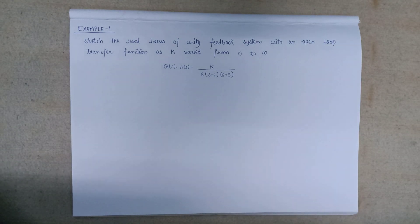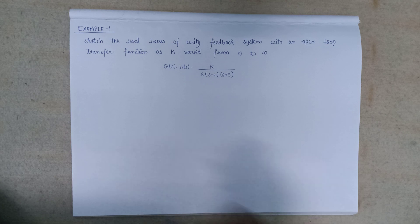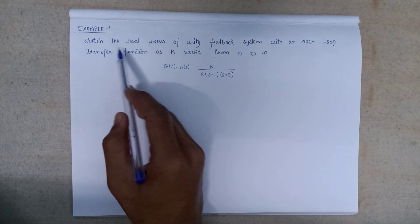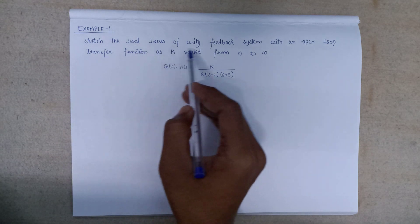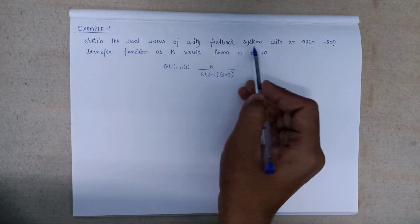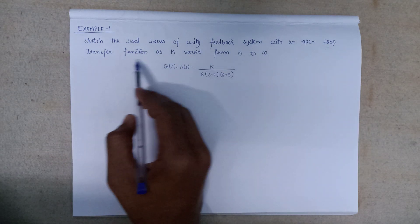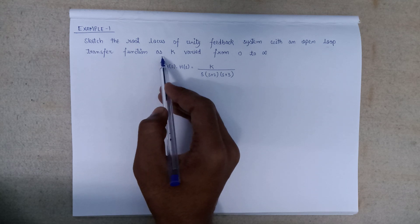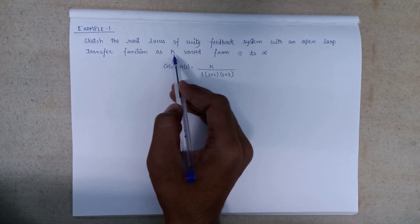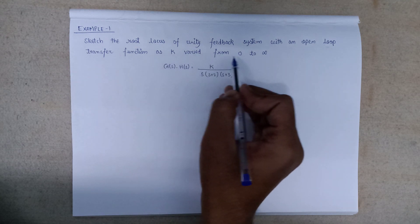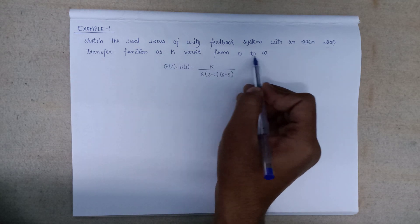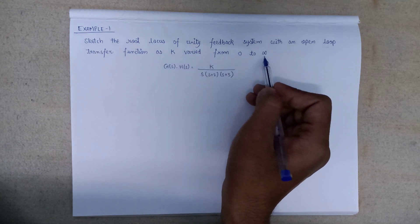Welcome all. In this lecture, we are going to solve one example: sketch the root locus of a unity feedback system with an open loop transfer function as k varied from 0 to infinite.